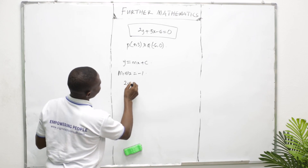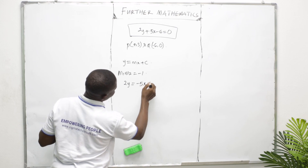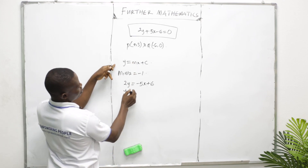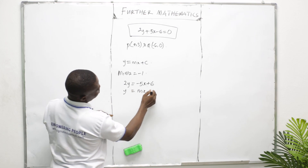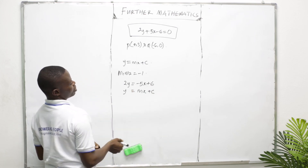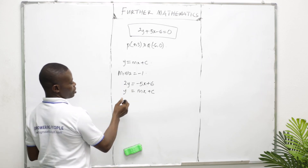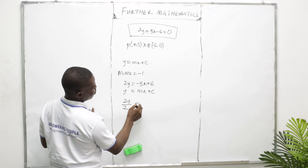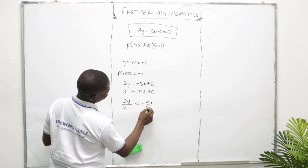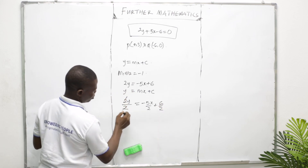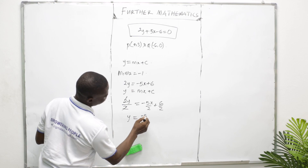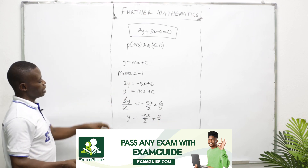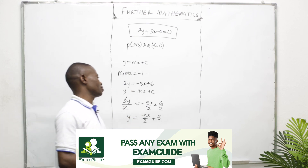Dividing through by 2: Y = −5X/2 + 3. It is now in the form Y = MX + C. By comparison, MX = −5X/2, so the gradient of the given line M1 = −5/2.